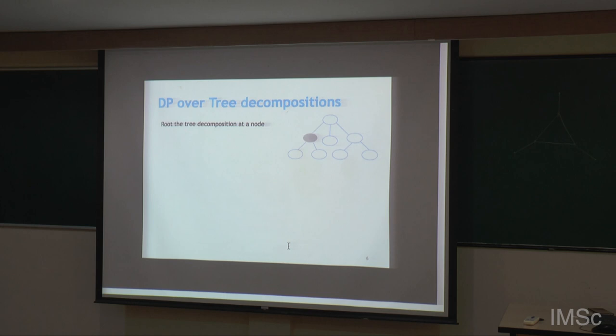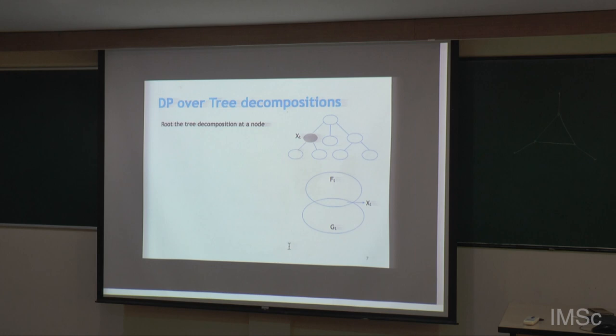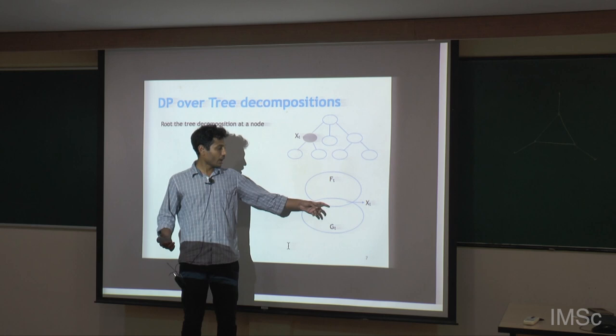We root the tree decomposition at some node. Each node in the tree decomposition is a separator, and that partitions the graph into two parts — one is bottom and another is top, or something which is present and something which is future. We try to partition all partial solutions which are fully below, based on how they interact with the boundary. That is the typical way of doing dynamic programming.